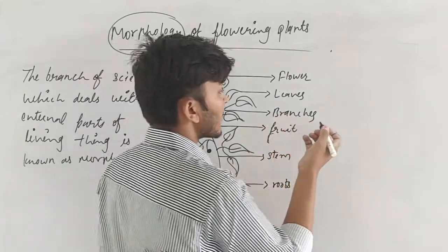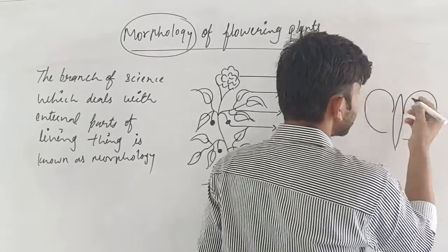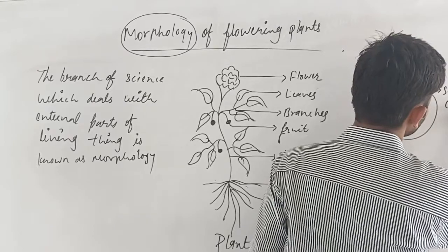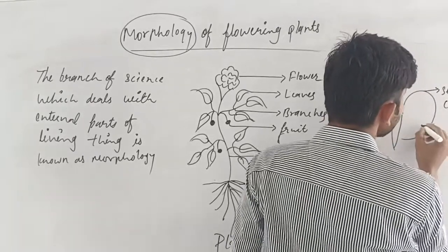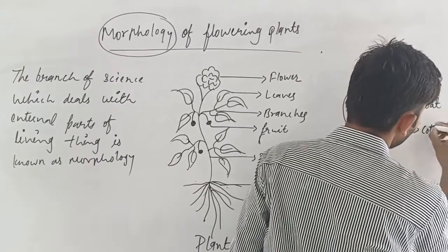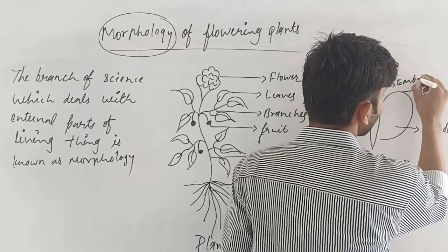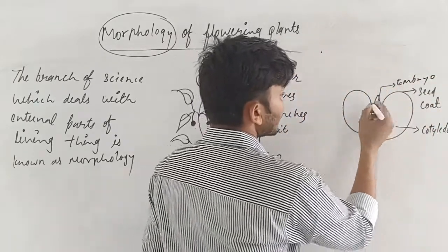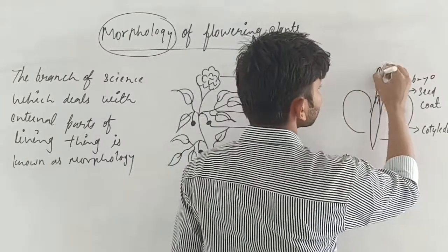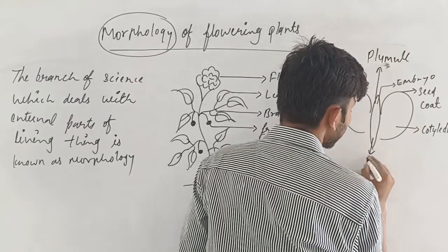Let's talk about how this plant is originated. This is the structure of seed. Seed coat is the outer layer, inside that we have cotyledons, in the center we have embryo. In the embryo the top region is plumule and the lower region is radicle.